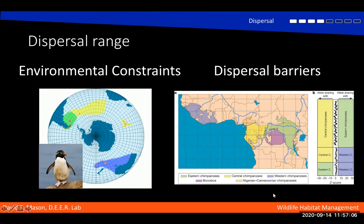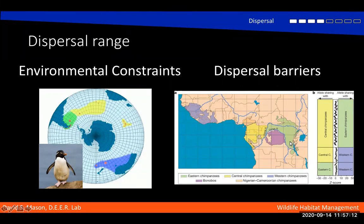We also have barriers to dispersal. We have these central chimpanzees, eastern chimpanzees, and bonobos here separated by the Congo River and a tributary of the Congo River as well. Basically these populations are isolated because they cannot cross the river, or can only do so rarely.